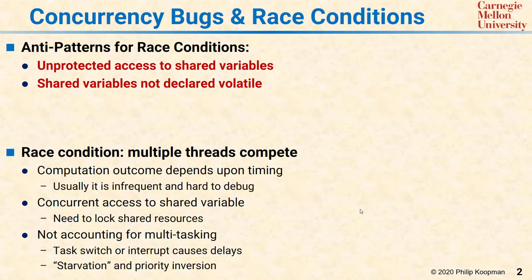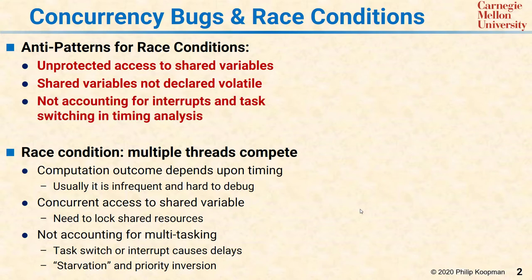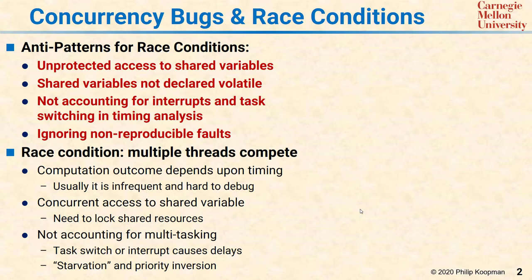Another anti-pattern is not accounting for interrupts and task switching when you do your timing analysis, and in particular when you have a prioritized scheduling system. The last anti-pattern is more about what happens during testing: if you're ignoring non-reproducible faults, probably what's going on is you have race conditions or other concurrency bugs, and you're just ignoring the fact they're there because you couldn't reproduce it.